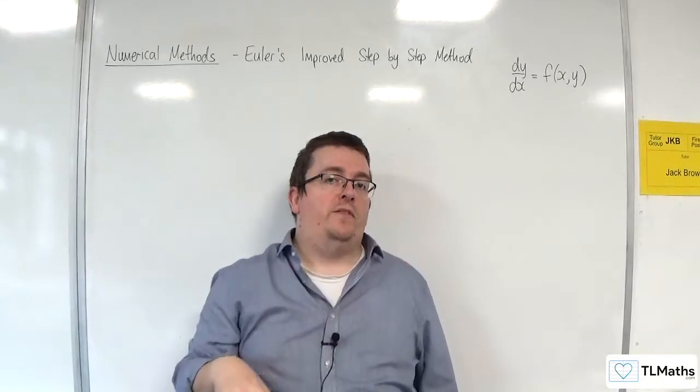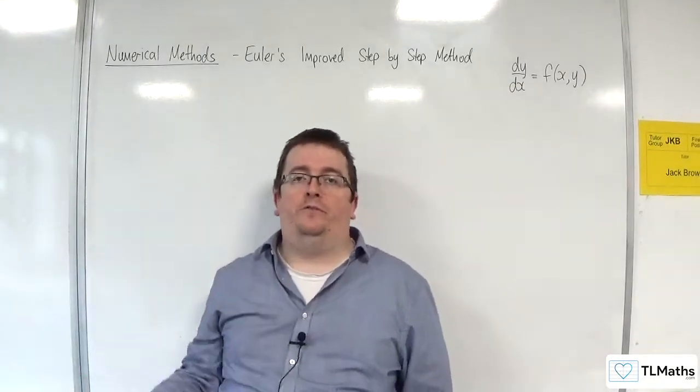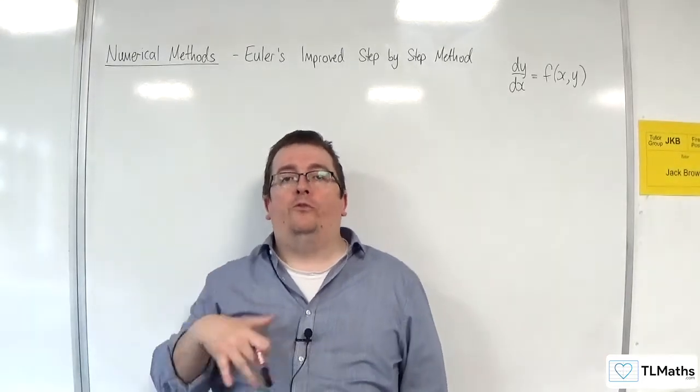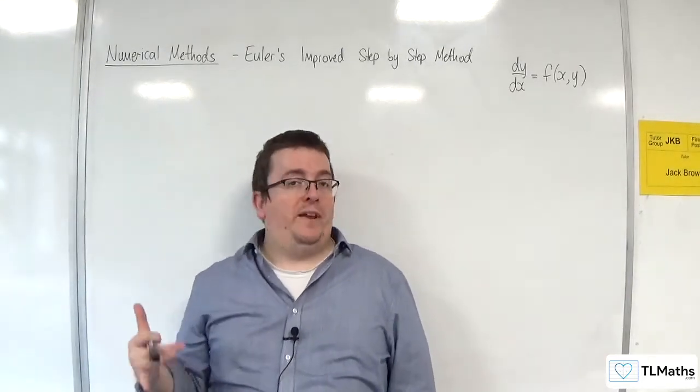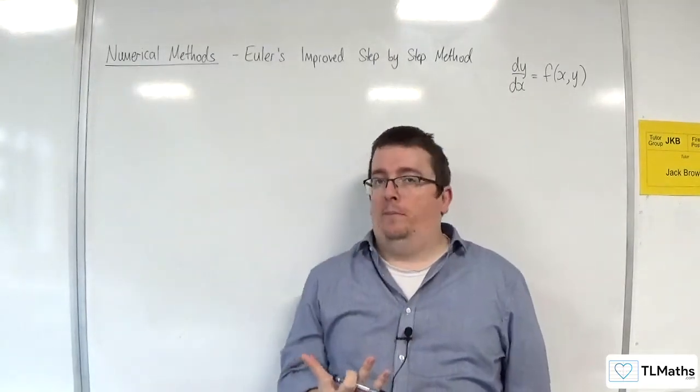So, following on from the previous video, where I said that was otherwise referred to as the midpoint formula, quite often what's referred to as the improved Euler step-by-step method is a formula that is slightly more complicated than that.